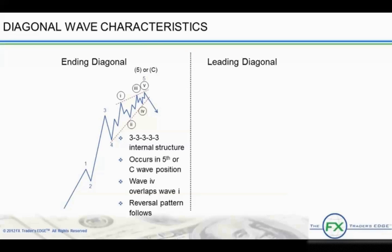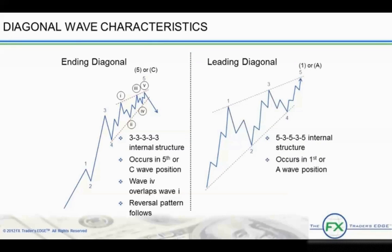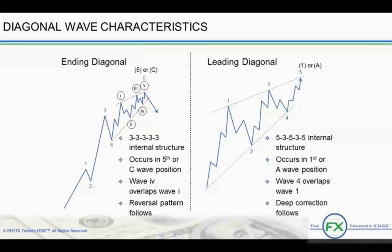In the case of a downtrend, it is a falling wedge. The internal structure of a leading diagonal is comprised of five, three, five, three, five subwaves. The five subwaves that make up a leading diagonal are a combination of impulse and corrective wave patterns. Leading diagonals occur in the first wave position or in the A position in an ABC correction. In leading diagonals, wave 4 also overlaps wave 1. Leading diagonals usually precede a deep correction or retracement. Sometimes the diagonal triangle takes on an expanding shape rather than a wedge shape, where the boundary lines diverge. In a wedge shape, the boundary lines converge.